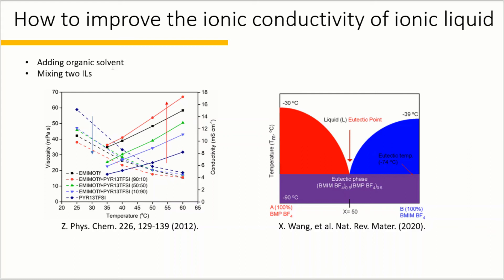The electrochemical stability of the ionic liquid-containing organic electrolyte is limited by the organic solvents. An alternative approach to reduce the viscosity and the melting point of an ionic liquid is to mix two ionic liquids with different cations.